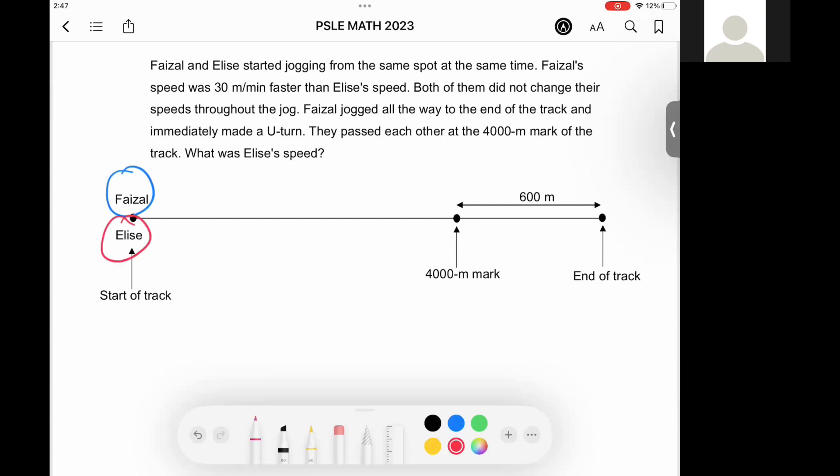They are both at the same spot and are going to start jogging along this running path. The clue states that Faiza's speed was 30 meters per minute faster than Elise's speed.